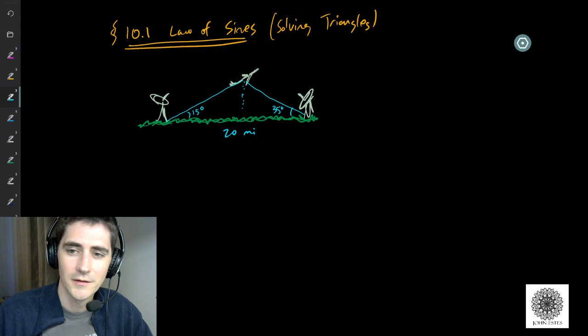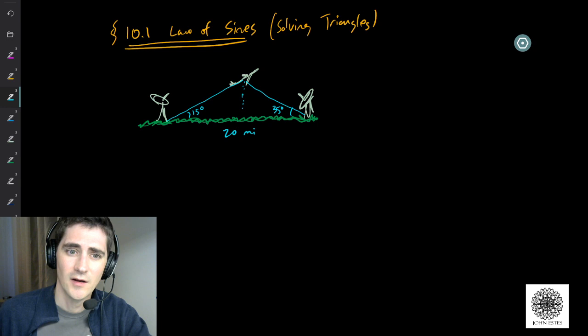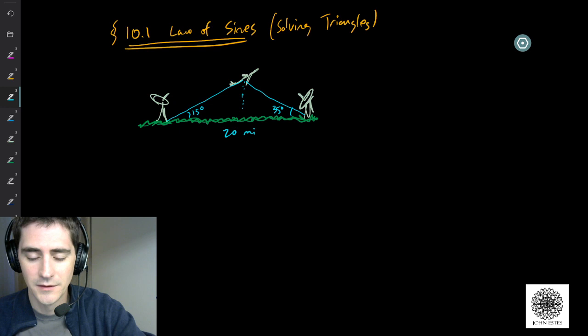Good morning. We're going to look at some trigonometry today, looking at something called the law of sines. Most of trigonometry has been about right-angled triangles so far, where we can use the Pythagorean theorem and these trig identities to figure out all the different sides and all the different angles.